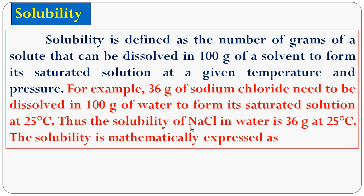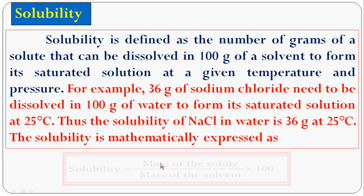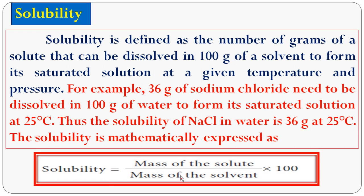Which is the solute? Sodium chloride is the solute. Which is the solvent? Water. Here, some particular number of grams — that is 36 grams — at a definite temperature, 25 degrees Celsius. The solubility is mathematically expressed as: solubility is equal to mass of the solute divided by mass of the solvent, into 100. So, solubility equals mass of sodium chloride divided by mass of water, into 100.